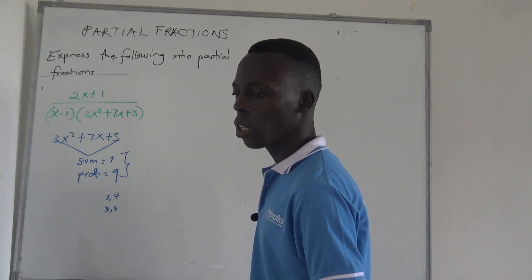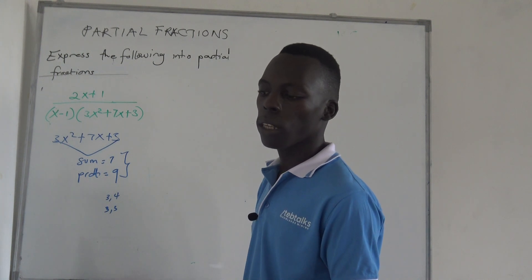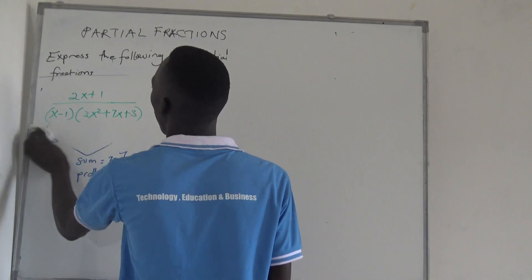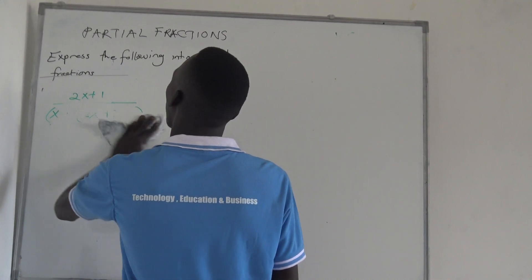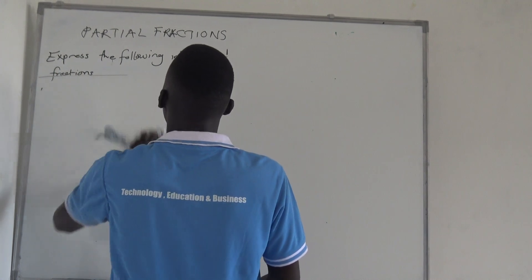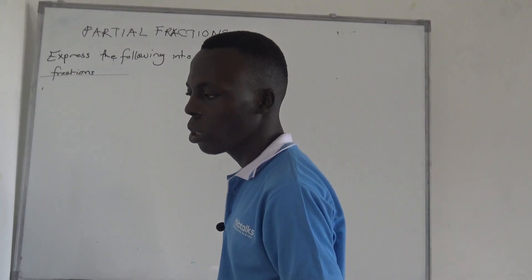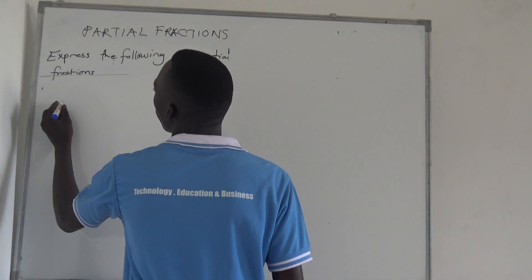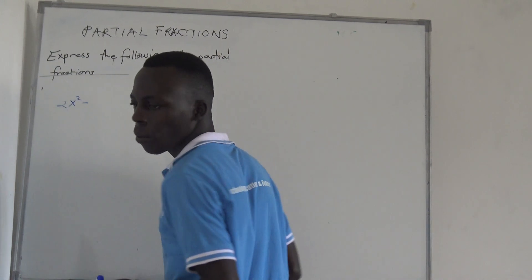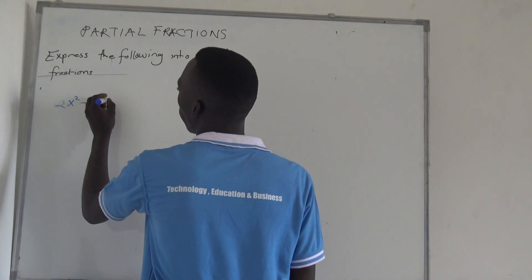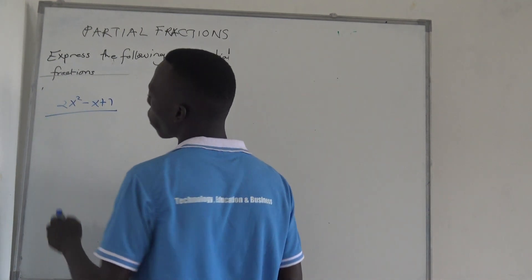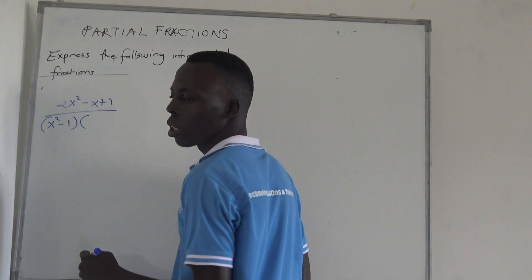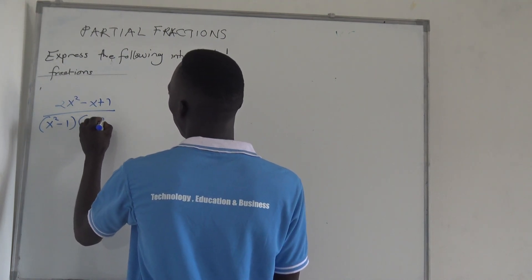Since there are no factors, we continue in another format. This is not a linear fraction we are dealing with here; we shall find it in the quadratic section we are heading to. So they give us another question: 2x squared minus x plus 1, out of x squared minus 1, times x plus 2.